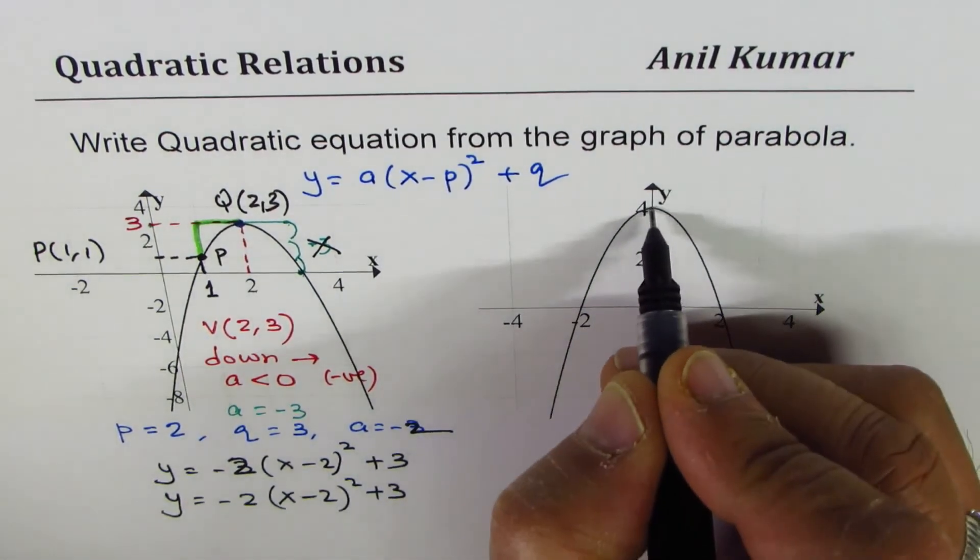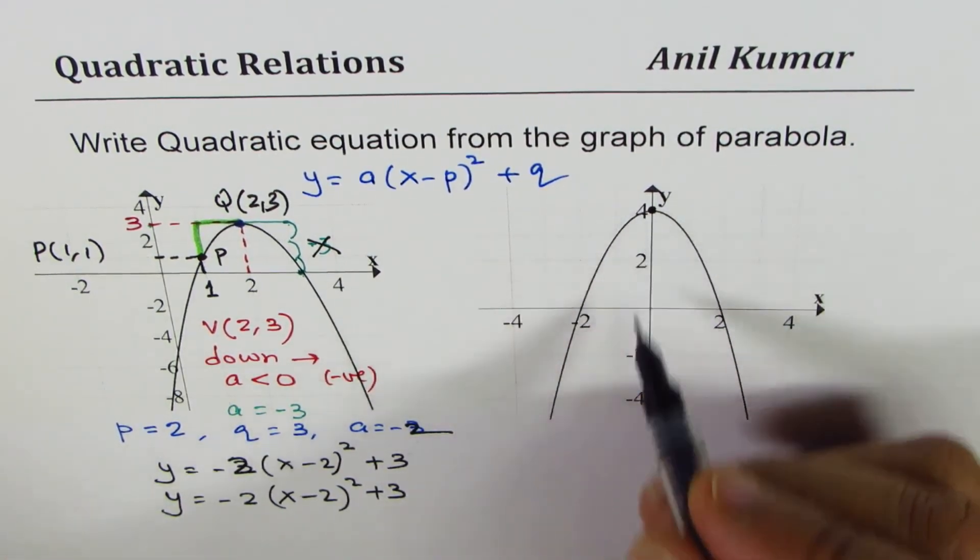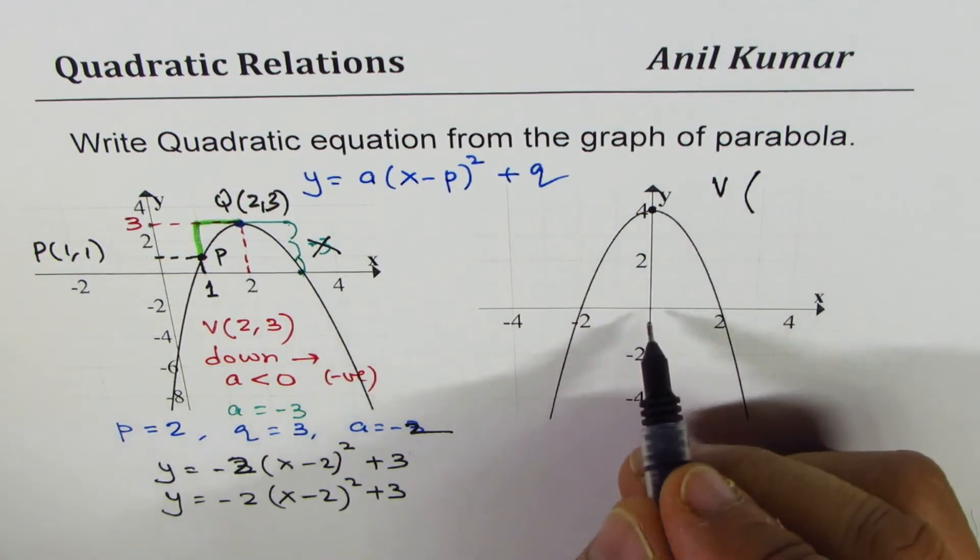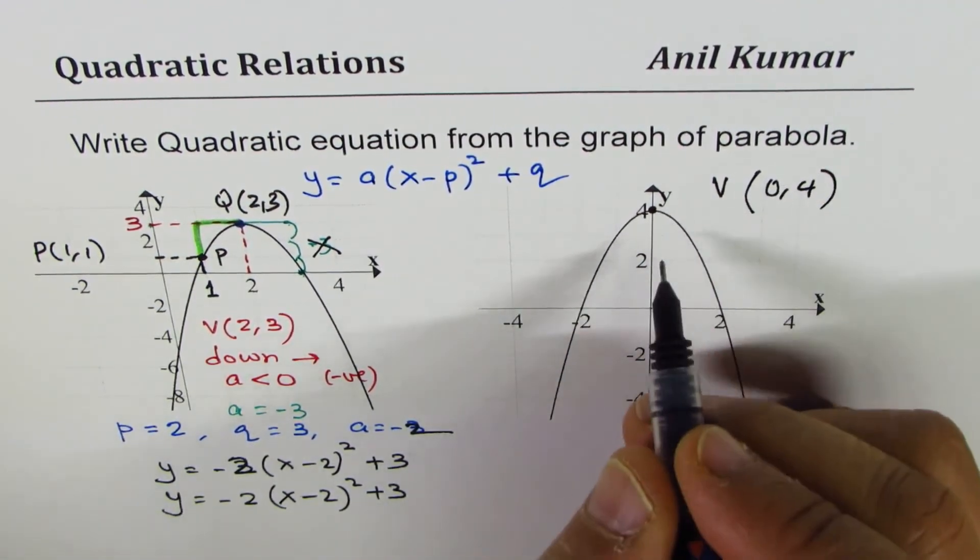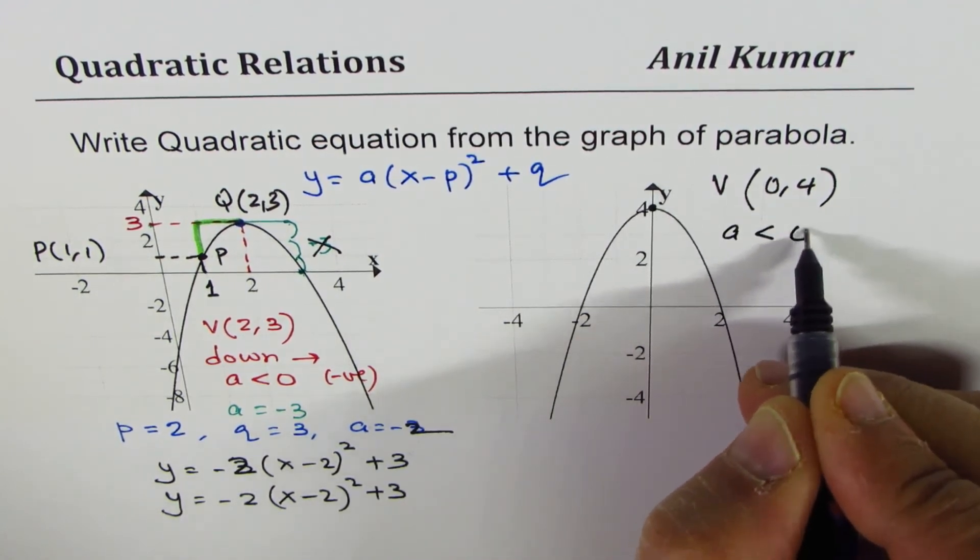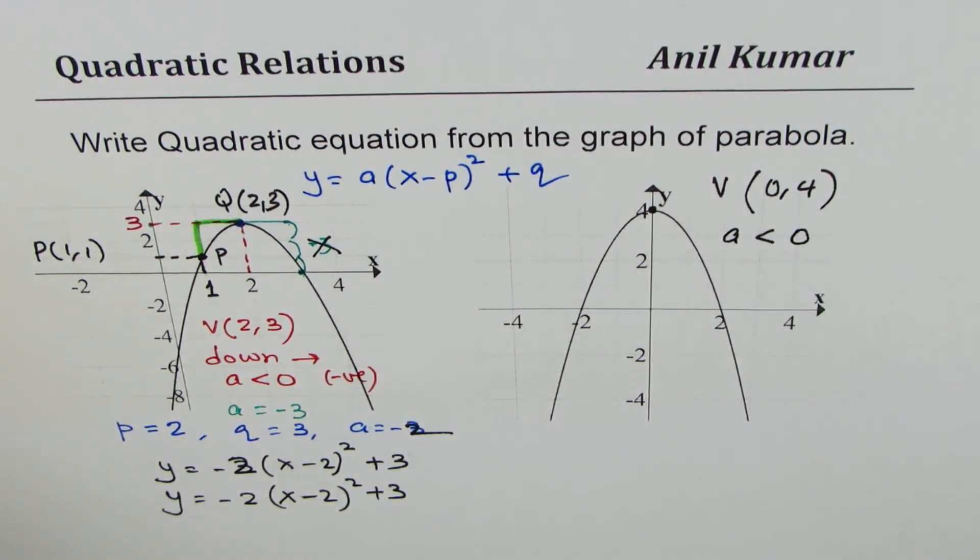Here is the last example, another parabola which opens downwards, whose vertex is 0, 4. So it is opening downwards, so A is expected to be less than 0. Let's figure it out.